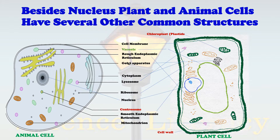Starting with plant-specific structures: plant cells have chloroplasts, which make the plant cells and leaves green, whereas animal cells have no chloroplasts. Next, plant cells have a rigid cell wall surrounding them, while animal cells do not have any cell wall. A third important feature unique to plant cells is that they have a large vacuole, whereas animal cells have a much smaller vacuole.